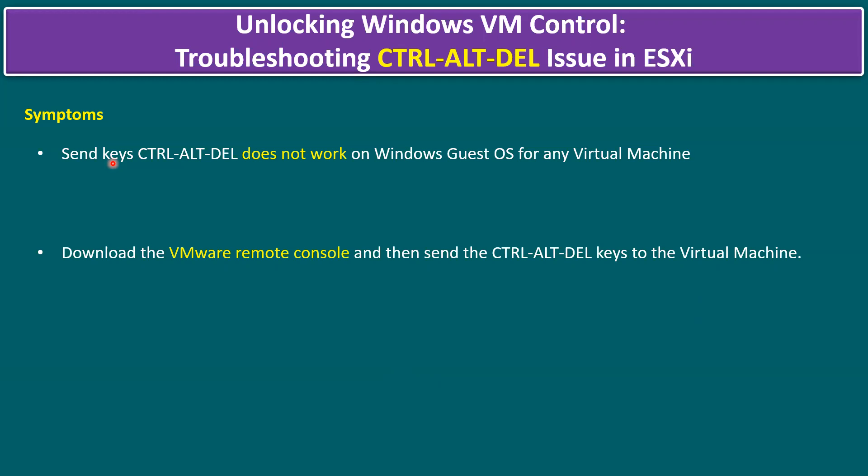For example, if the data center is in a remote site, branch office, DMZ zone, or a test environment, we may not have a vCenter Server. In cases where you have only a single ESXi host at a remote office, when you try to access your Windows virtual machine there is a possibility that in some cases you are unable to send Ctrl+Alt+Delete to the Windows virtual machine guest OS.